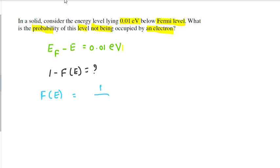F(E) equals 1 over 1 plus exponential of (E minus Ef) by kT. So F(E) = 1/(1 + e^((E-Ef)/kT)). Here E minus Ef is negative.